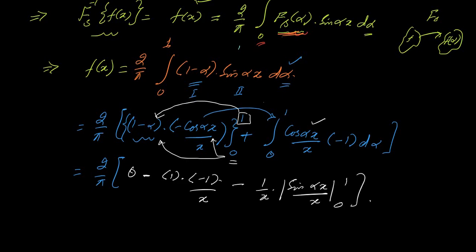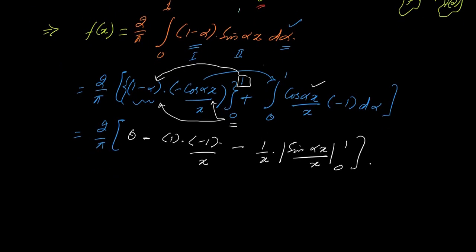This simplification you can perform. Here we get minus minus 1 over x. The upper limit: sin 0 sin 1, when alpha value is 1 you get sin of x, sin of x over x. Minus when you put alpha as 0, sin 0 is 0, so only x will survive.